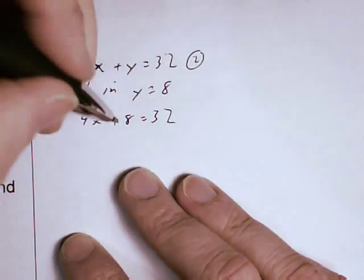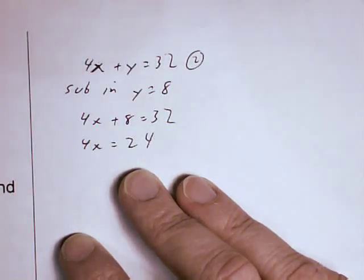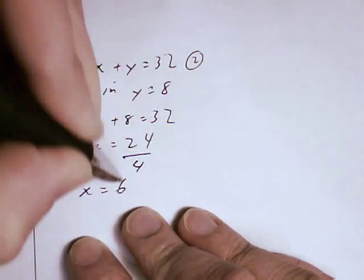To get rid of that 8, I'll subtract from both sides. And to get from 4x down to x, I'll divide by 4. And that gives me x equals 6.